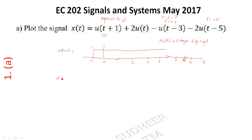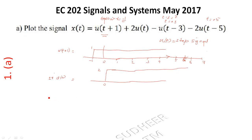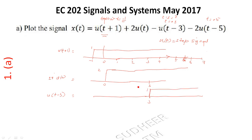Then 2·u(t) starts from t = 0 with magnitude 2. u(t-3) starts from t = 3 with magnitude 1. Then 2·u(t-5) starts from t = 5 with magnitude 2.